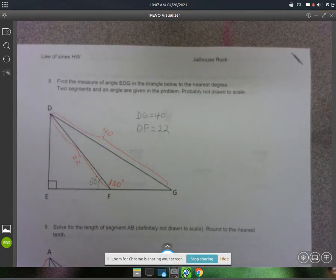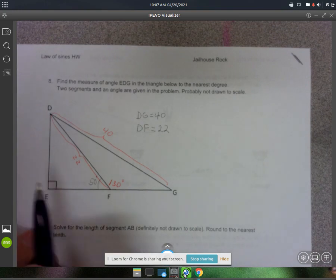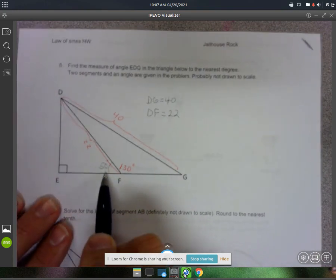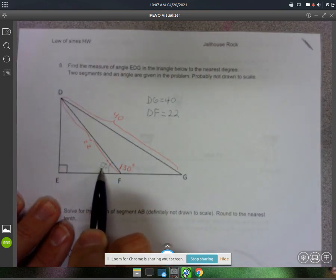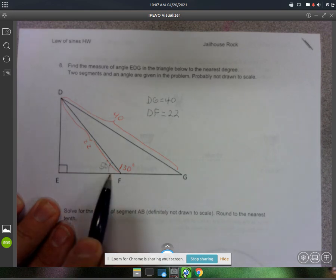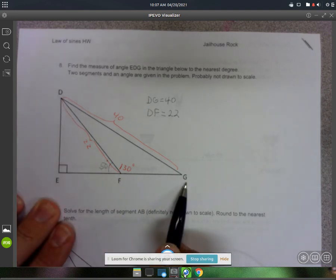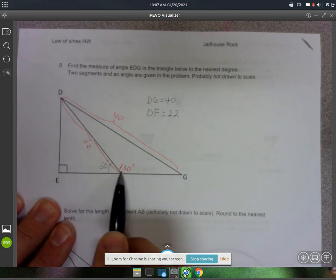All right, let me see how I did number 8. Okay, so to start here, if you know this angle is 50, I can get angle DFG for free just because they add up to 180 right here.